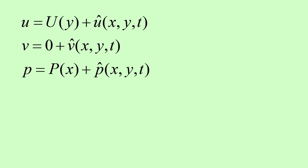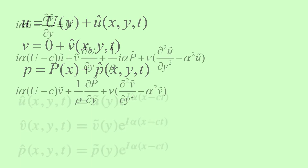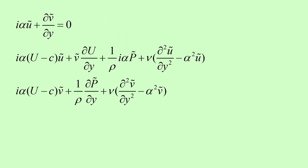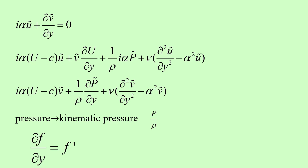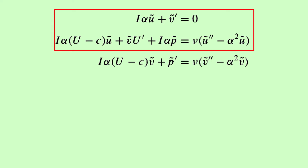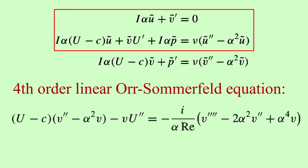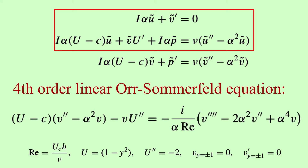Back to our equations. If I put these equations into the Navier-Stokes equations and simplify them I come up with three equations. Instead of pressure I can use kinematic pressure, which is pressure divided by density, and all derivatives are with respect to Y using prime notation. If I eliminate P-tilde and U-tilde using these two equations and non-dimensionalize the resulting equation by h and centerline velocity, the result is the fourth order linear Orr-Sommerfeld equation. Solving this equation determines the flow stability.